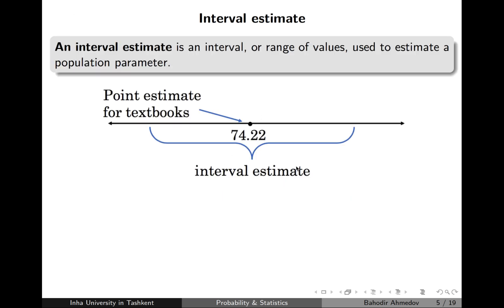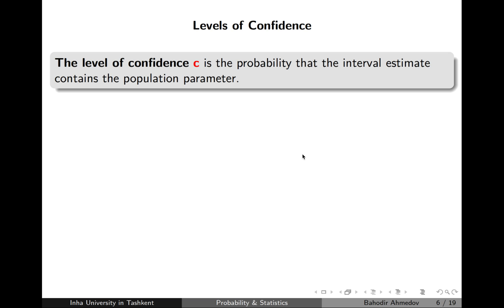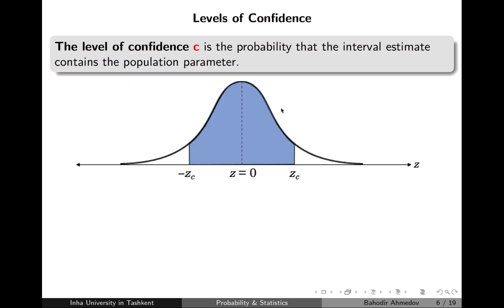The interval estimate is the estimation of the population parameter in some interval around the point estimate. The length of the interval depends on how confident I would like to be. If I would like to be more confident I choose a bigger interval; if less confident, a smaller interval. The level of confidence is the probability that the population parameter mean is within this interval.